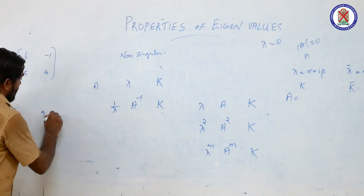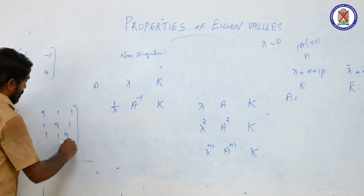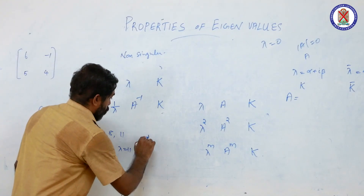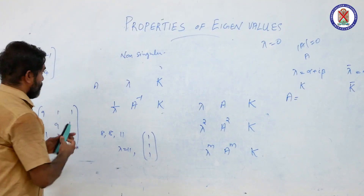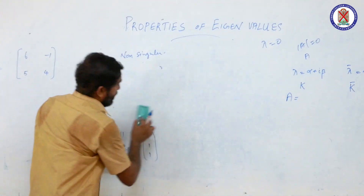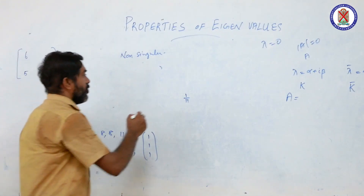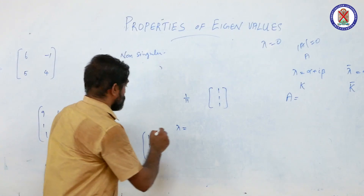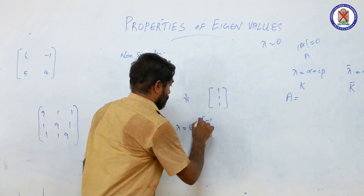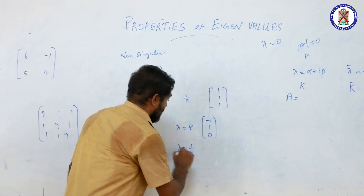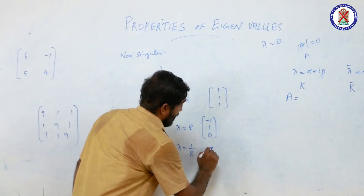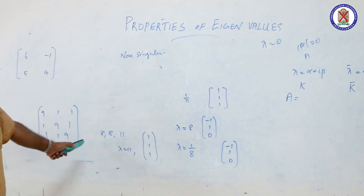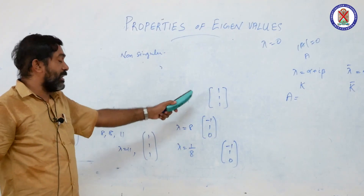For the 3×3 matrix with 9s on the diagonal, with eigenvalues 8, 8, and 11: the eigenvector corresponding to lambda equal to 11 is [1, 1, 1], so 1/11 is an eigenvalue of A inverse with eigenvector [1, 1, 1]. One eigenvector for lambda equal to 8 is [−1, 1, 0], so 1/8 is an eigenvalue of A inverse with eigenvector [−1, 1, 0]. We can find all eigenvalues and eigenvectors of A inverse without explicitly computing it.